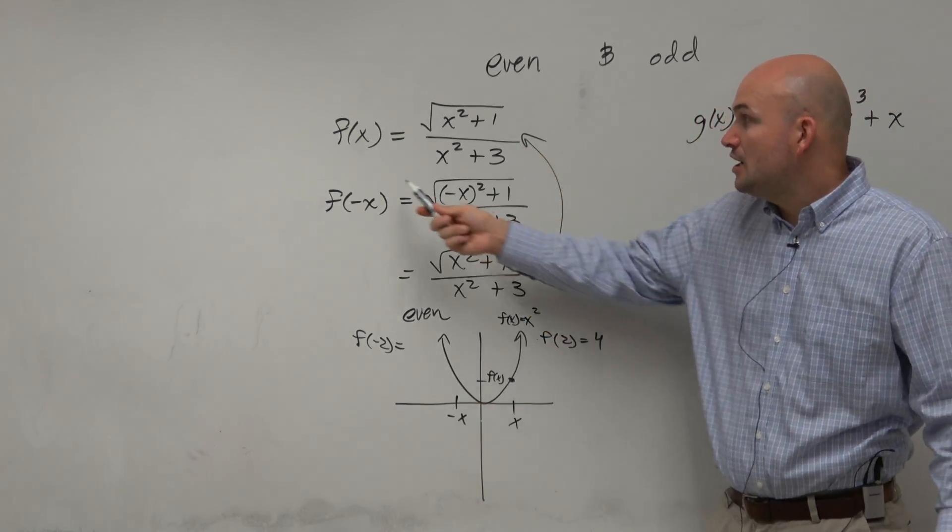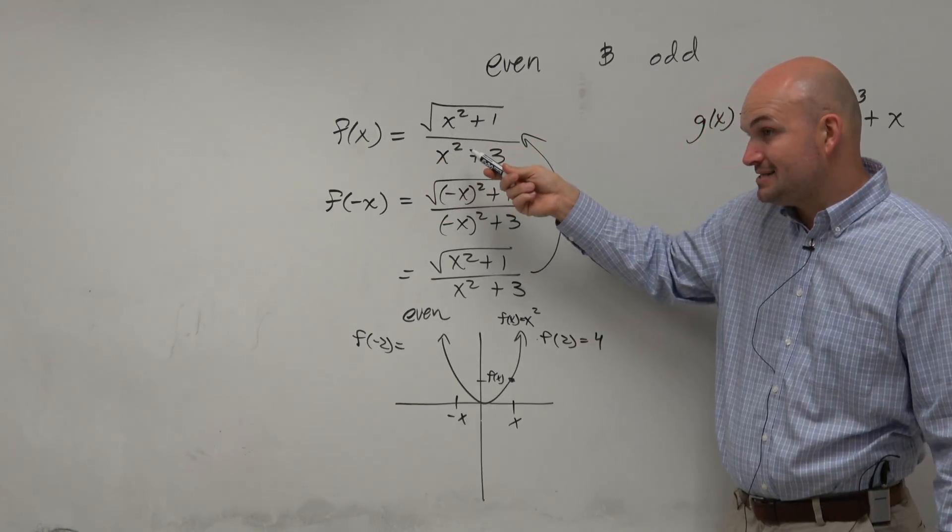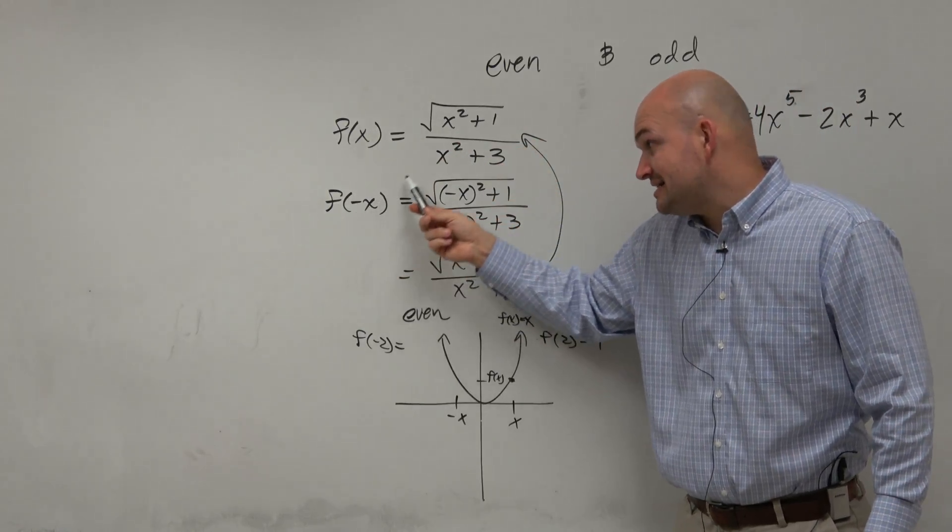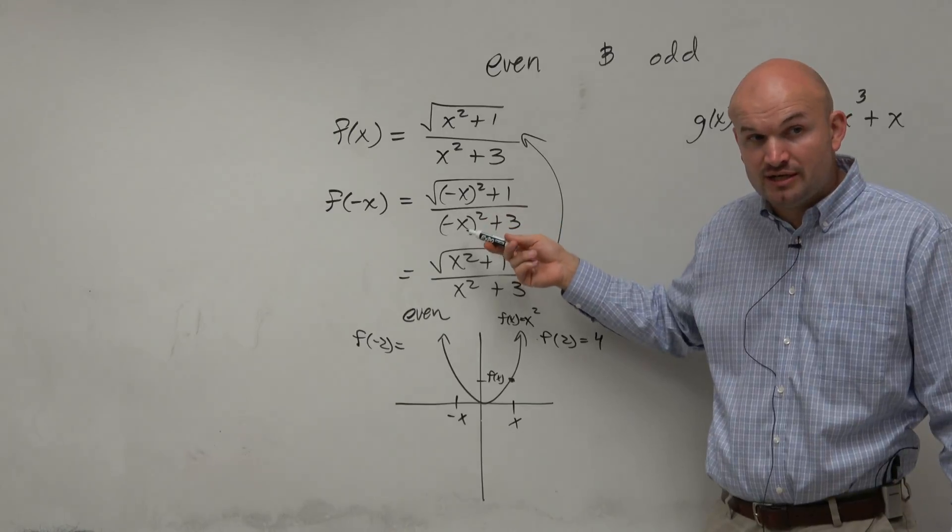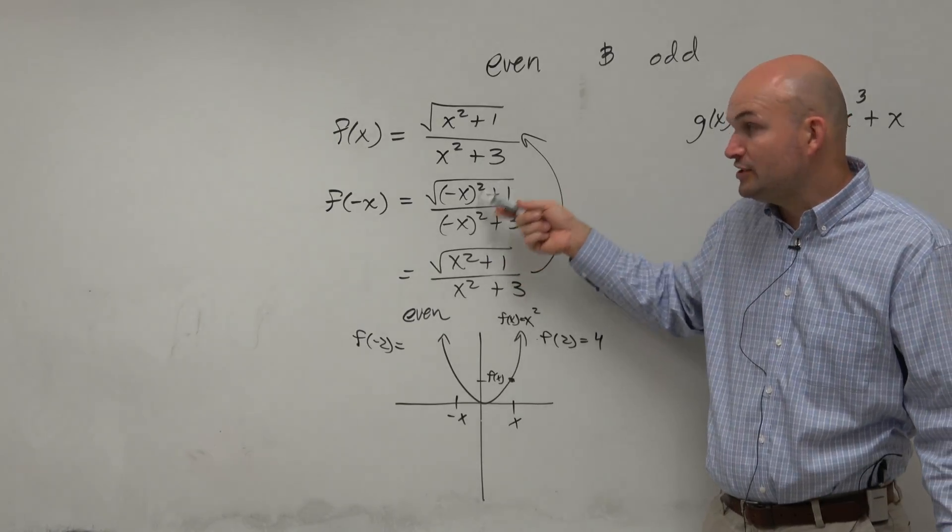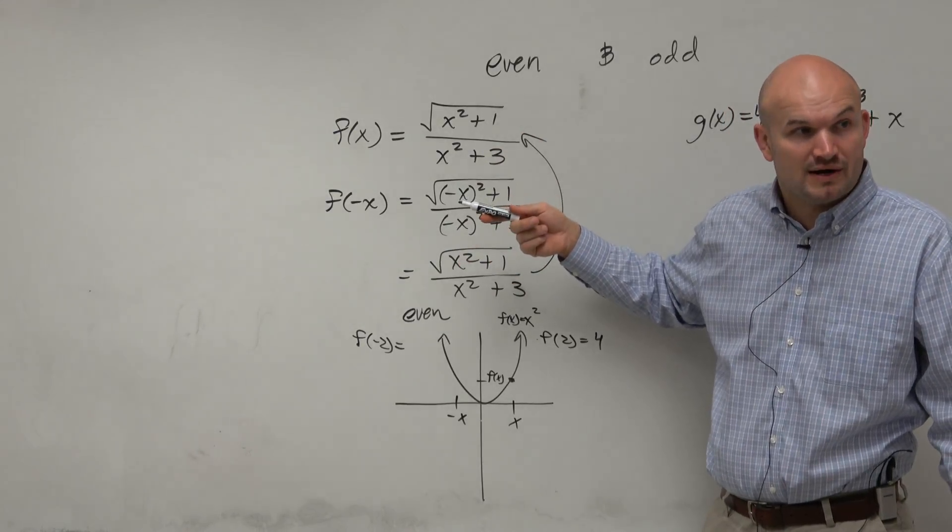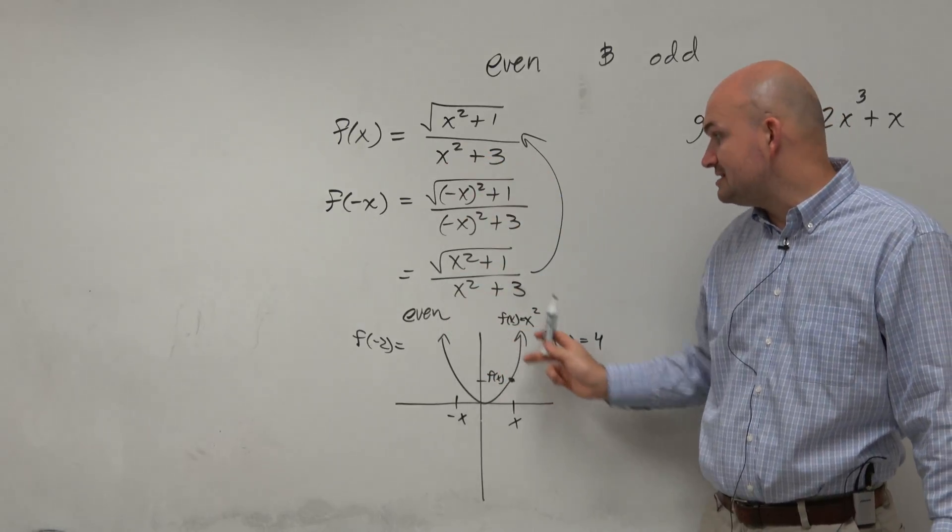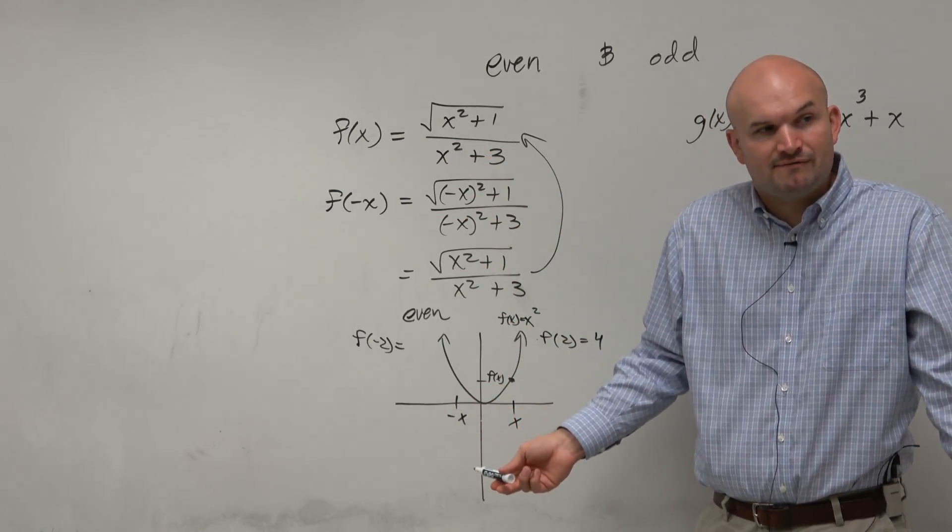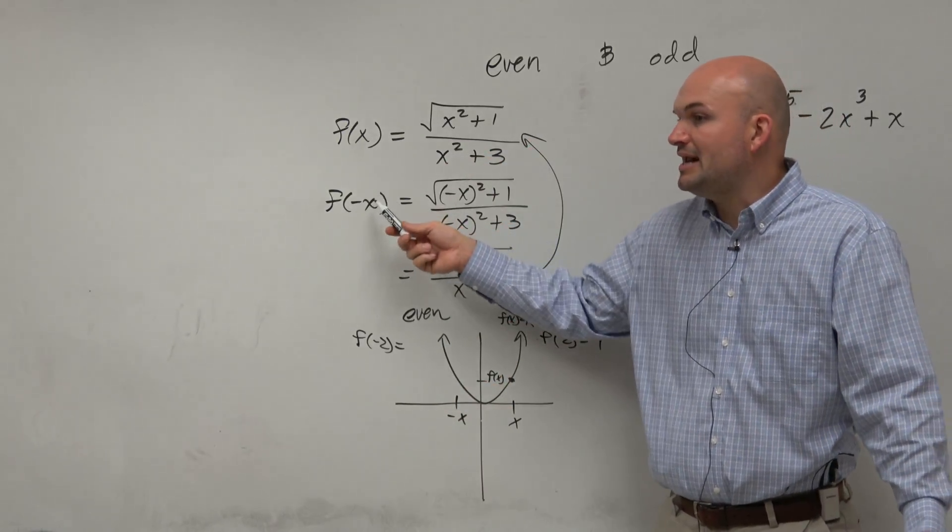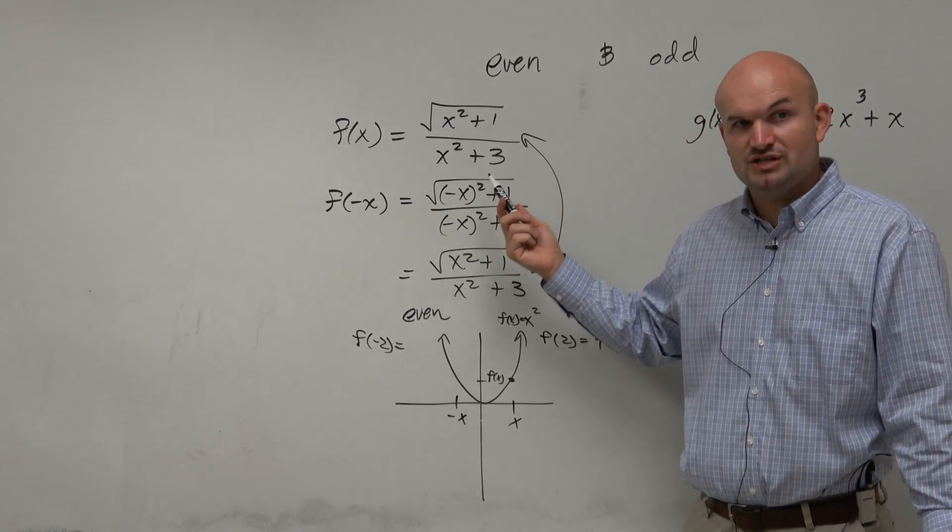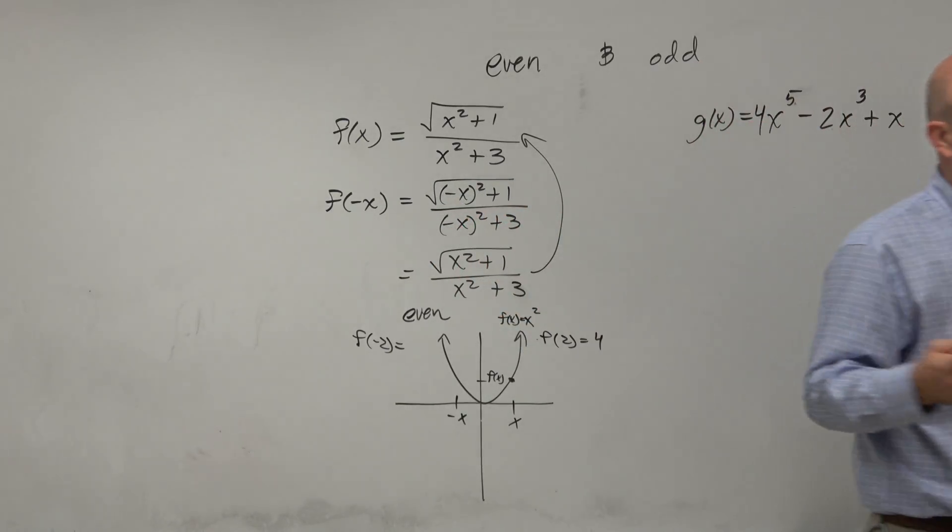So what this is showing is if f of x is this and f of negative x is the exact same expression, it doesn't matter what numbers I plug in, they're going to give you the same values. Right? So that is showing the symmetry of the function. You don't need to know what the graph looks like. You just need to understand, if you plug in f of negative x and you get the exact same function back, the function is even. OK? Now, the next one is a polynomial.